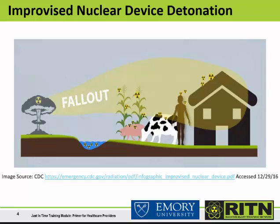When an IND explodes, a large fireball is created. Everything inside this fireball vaporizes and is carried upward, forming a mushroom-shaped cloud visible from a distance. The material in the cloud is composed of radioactive atoms and radioactive debris. These cool down as radioactive fallout that is carried by the wind and can end up miles away from the explosion. Fallout is radioactive and can irradiate people on its path and contaminate the environment that it lands on.